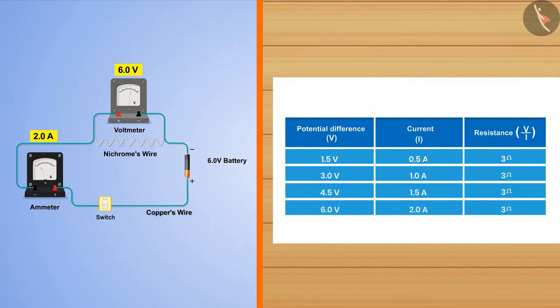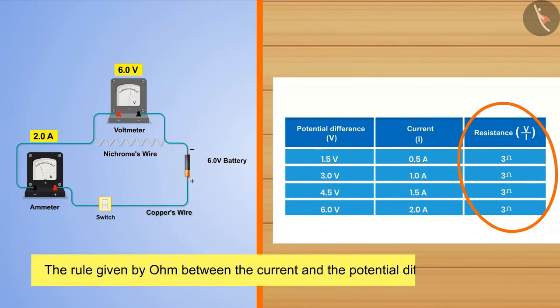If the ratio of potential difference and electric current is taken, they will always be the same. So we can say that the rule given by Ohm between the current and potential difference was correct.